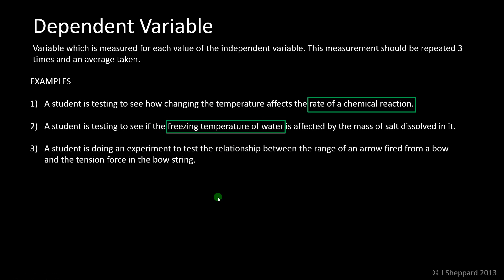You're going to repeat the experiment three times with the same mass of salt and see what the freezing temperature is each time. Then you're going to change the mass of salt and do it again. So the freezing temperature is your dependent variable here, the one that you are going to measure as a consequence of changing your independent variable.